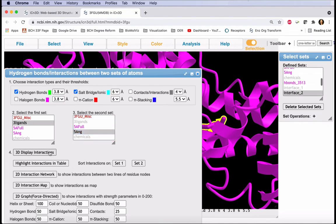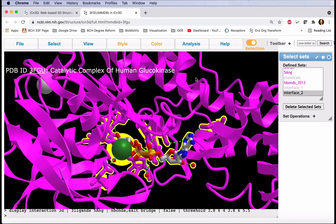Click on 3D Display Interactions, and close the window. Notice we see now pink sticks for the interacting residues.